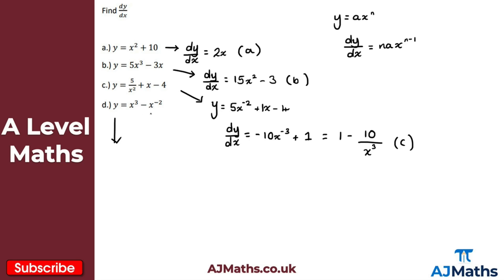For part d, y equals x cubed minus x to the minus two. Differentiating x cubed gives 3x squared. Take care with the second term: minus x to the minus two means minus 1 times minus 2 gives positive 2. Reducing the power by one gives 2x to the minus three. So dy/dx equals 3x squared plus 2x to the minus three. Be careful with signs here — it's easy to make a mistake.